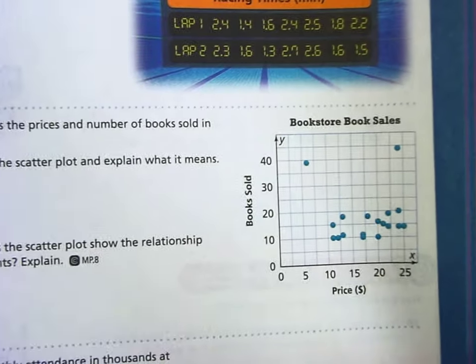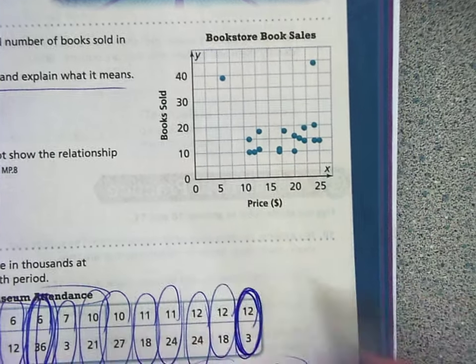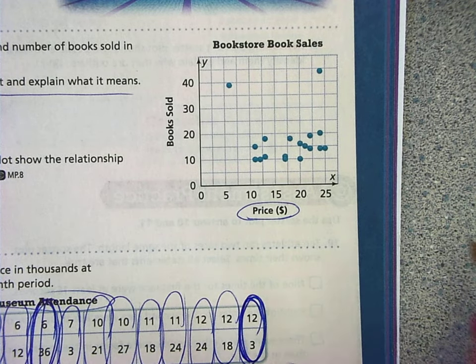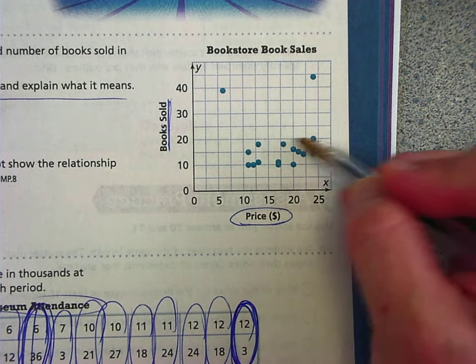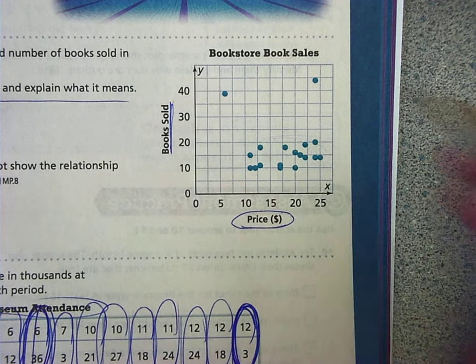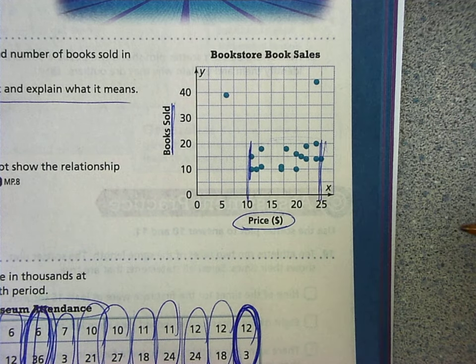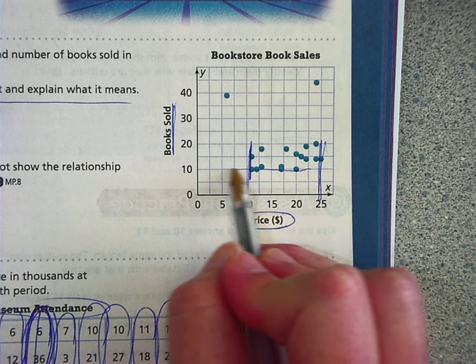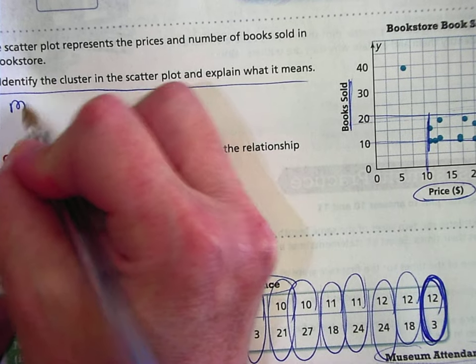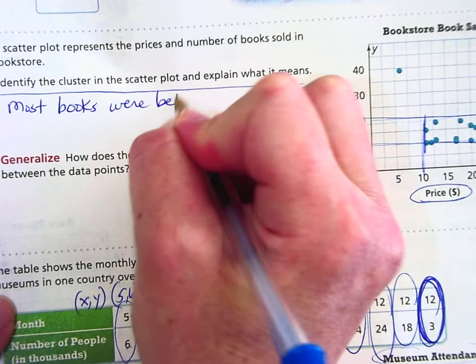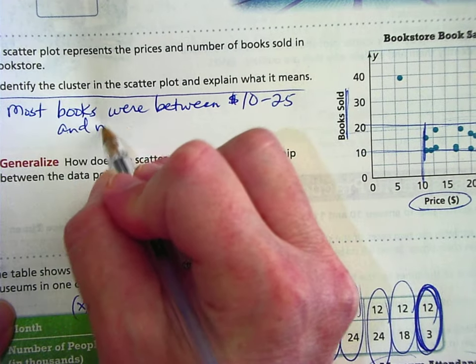Okay. So let's take a look at this bookstore sales. This says identify the cluster in the scatter plot and explain what it means. This is the price of the books that they're selling, and this is how many books sold. Now the cluster. I would definitely say this would be your cluster. Most of the points are right here. So we would say most of the books sold were between about $10 and $25. And then that would be most people bought between 10 and 20 books. So most books were between $10 and $25.